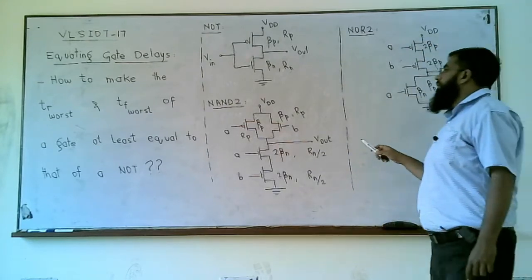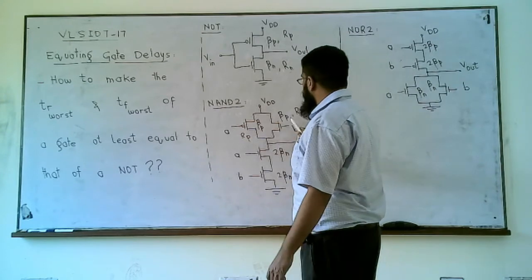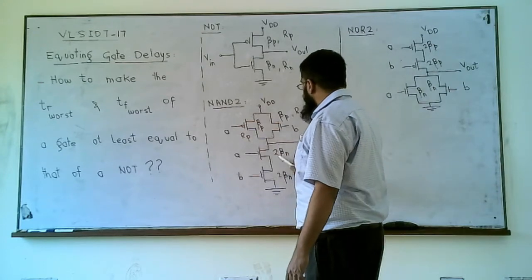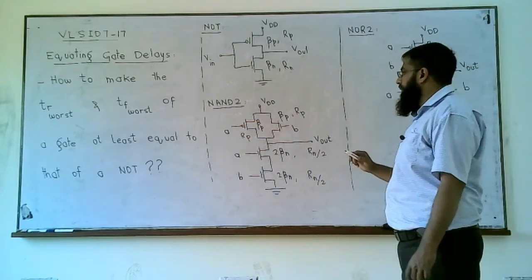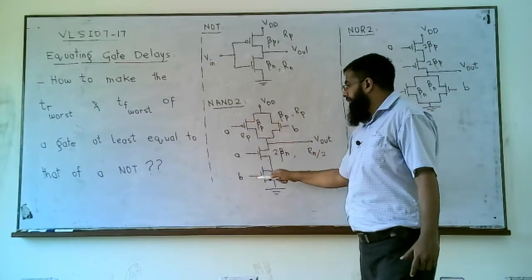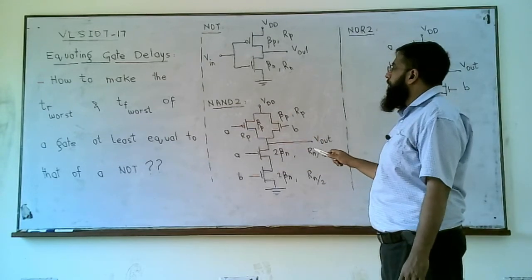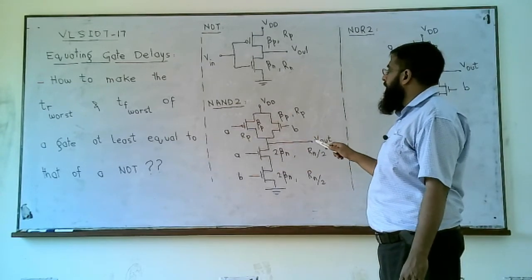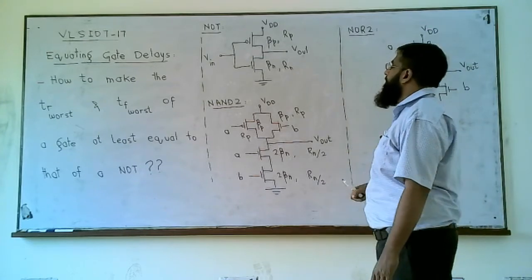So this NAND2 circuit with beta_p for each pMOS transistor and 2×beta_n for each NMOS transistor offers worst case rise and fall time delays at least equal to those of a NOT gate.